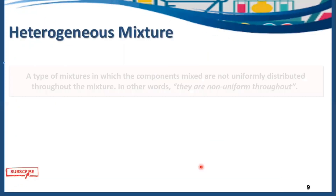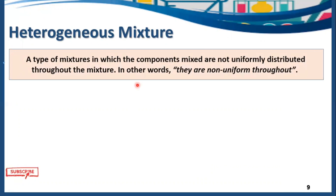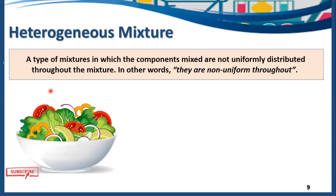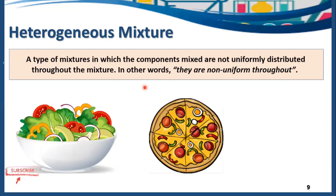Heterogeneous mixture is a type of mixture in which the components are not uniformly distributed throughout — in other words, they are non-uniform. For example, in a salad, the components are not uniformly distributed and you can see them with your naked eye: tomato, capsicum, cabbage, onion. You can see all the components of a heterogeneous mixture with your naked eye, and they are non-uniform.